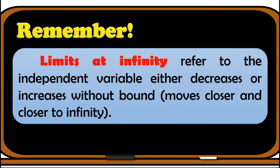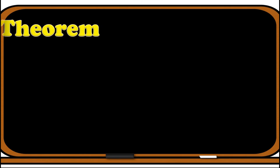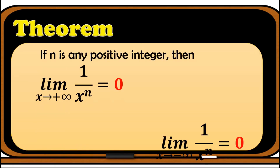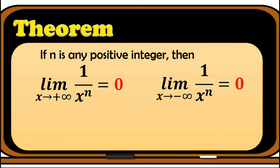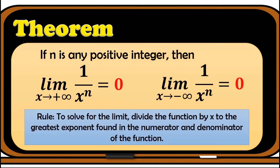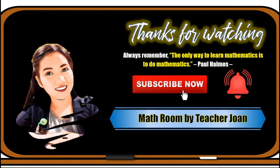Here are the important things to remember. First, limits at infinity refers to the independent variable either decreasing or increasing without bound. The key theorem: if n is any positive integer, then the limit of 1/x^n as x approaches positive or negative infinity equals zero. Also remember the rule: divide the function by x raised to the greatest exponent found in the numerator and denominator.